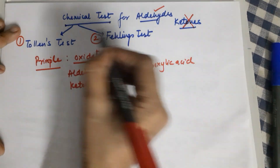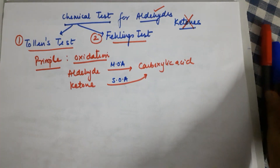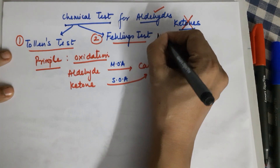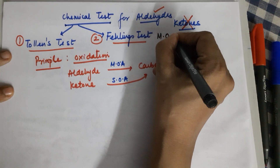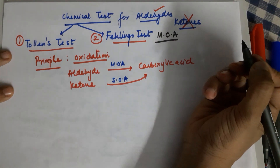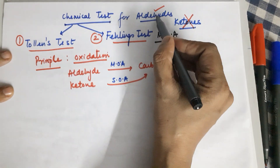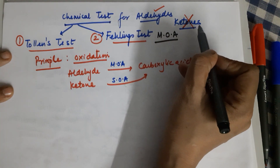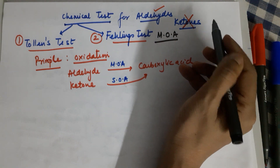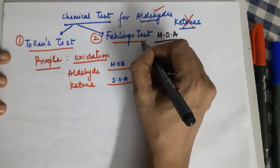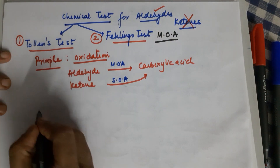Both the Tollens and Fehling tests fall under the category of mild oxidizing agents. That is the reason you can use them for aldehydes and you cannot use them for ketones. Also, Fehling solution is milder than Tollens.